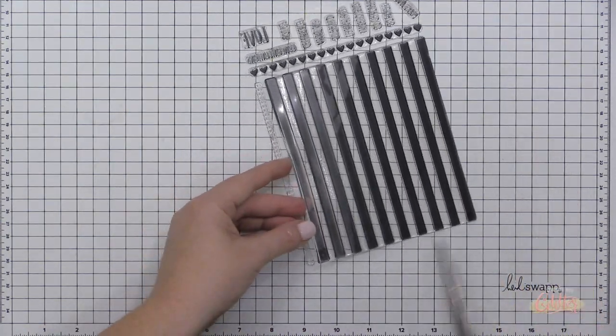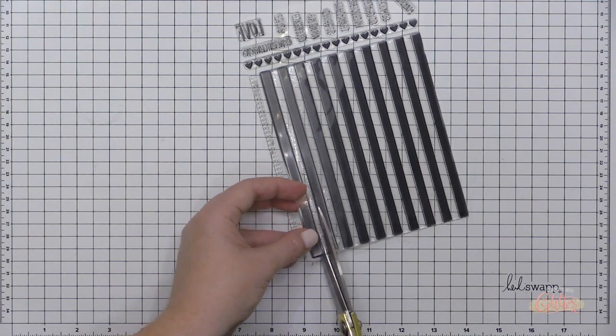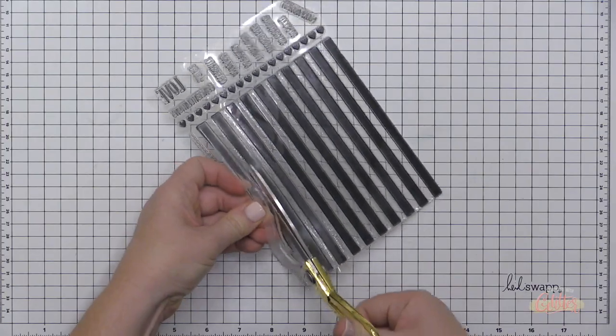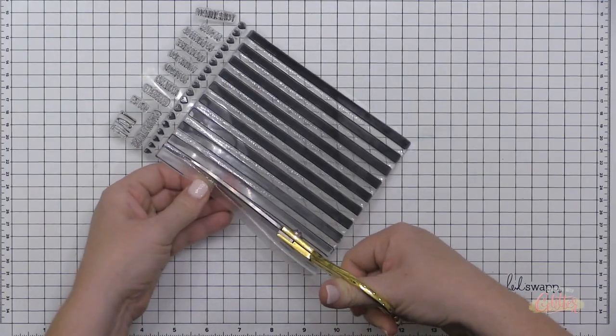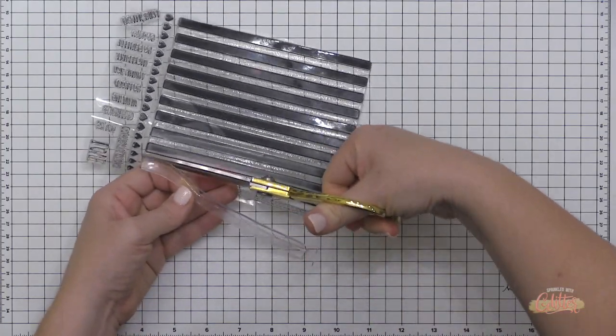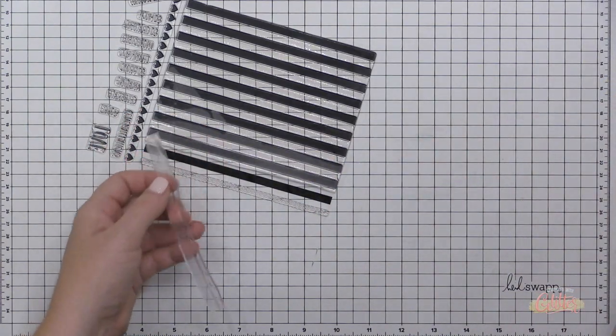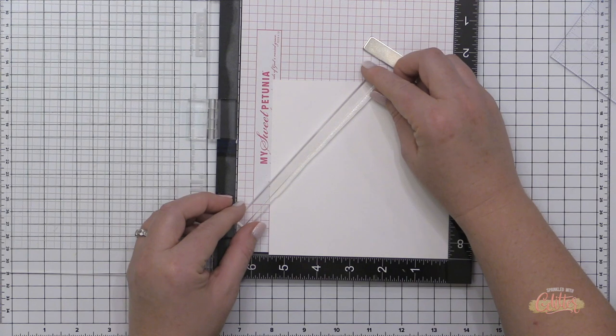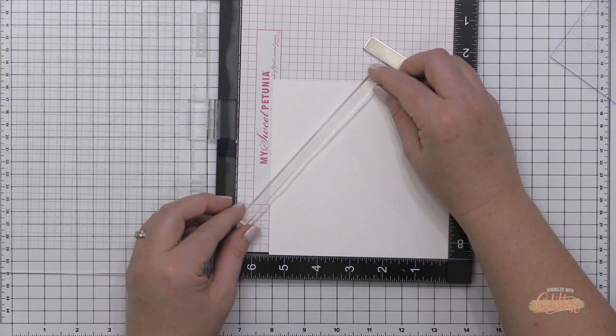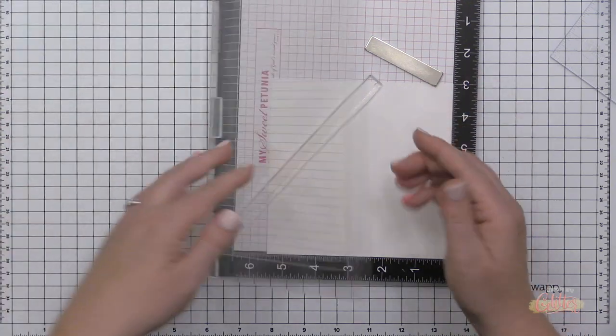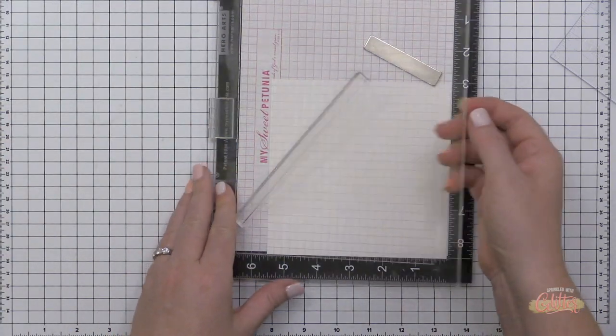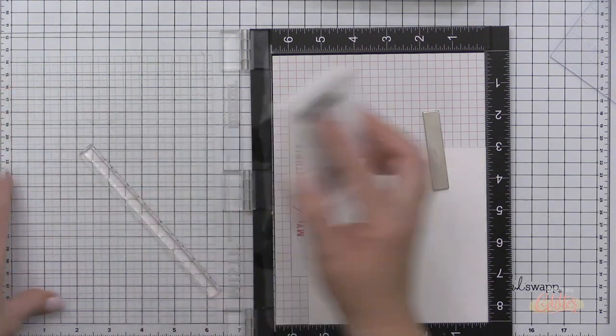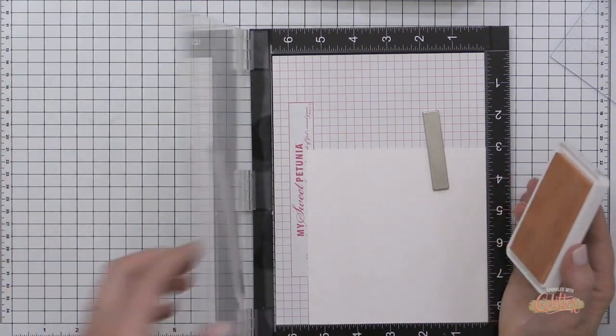I'm starting out with this Concord & Ninth stripe background stamp and I'm actually just taking one of the stripes. I'm cutting between the areas where the stamp actually stamps, cutting this down so I can use one of these stripes. I know that there are some of you out there who saw me do that and it physically hurts you, but don't worry, I can always mount them all back together and use it as it was originally intended.